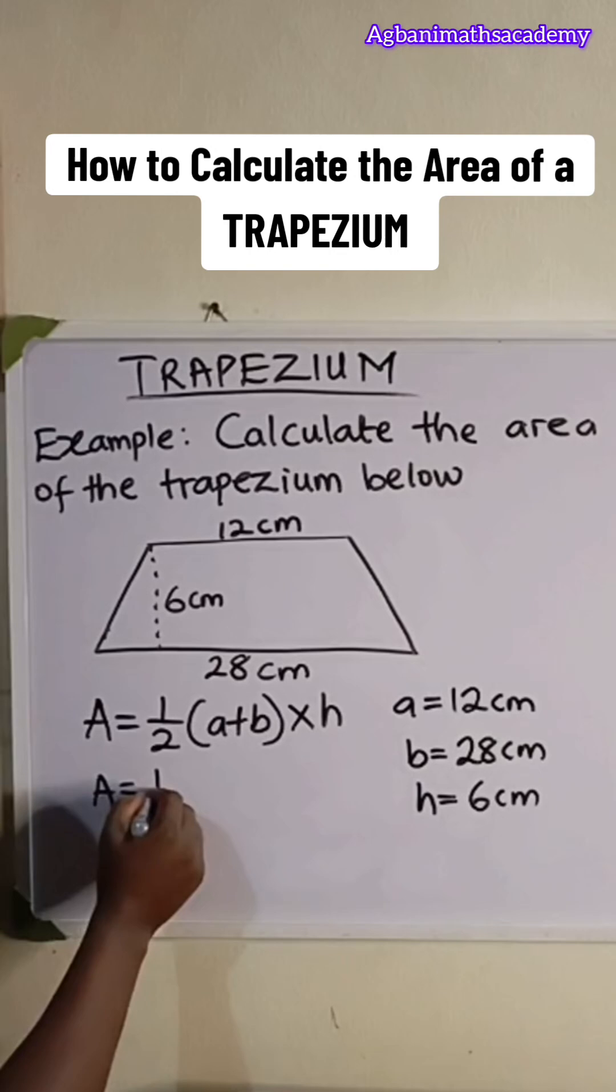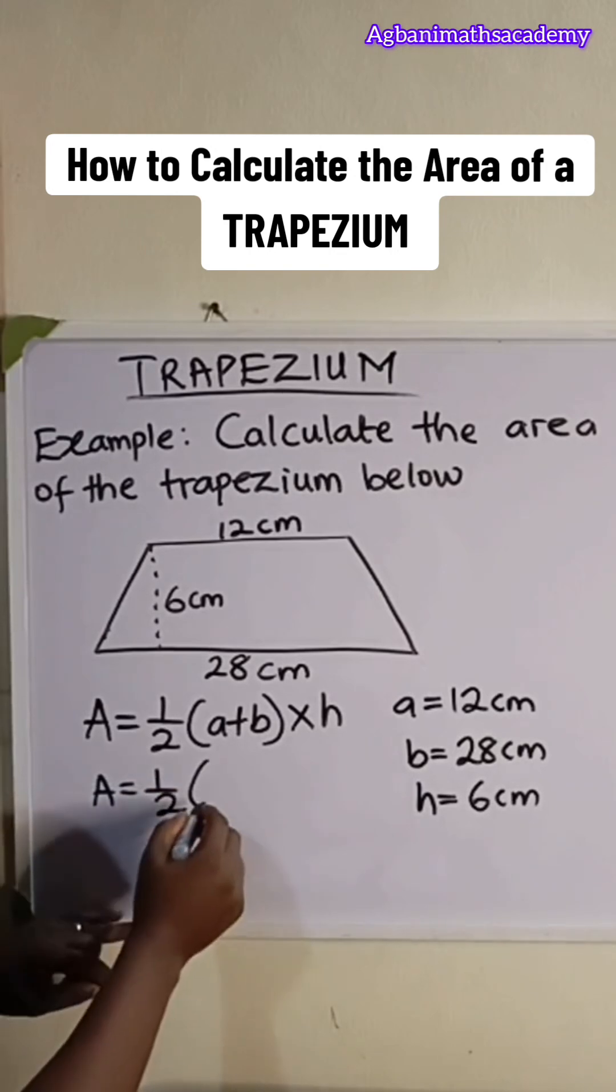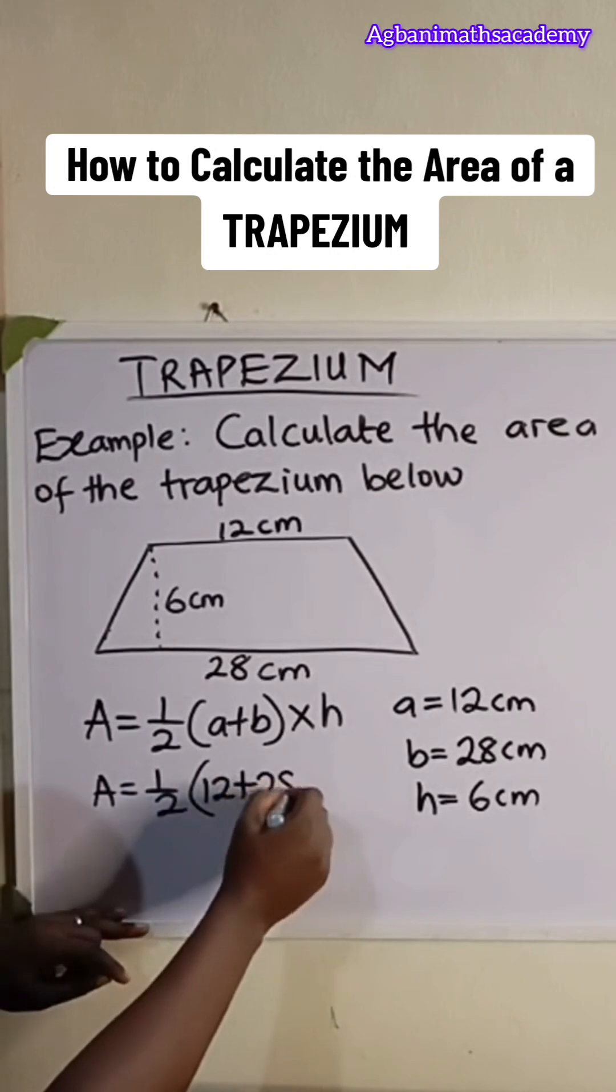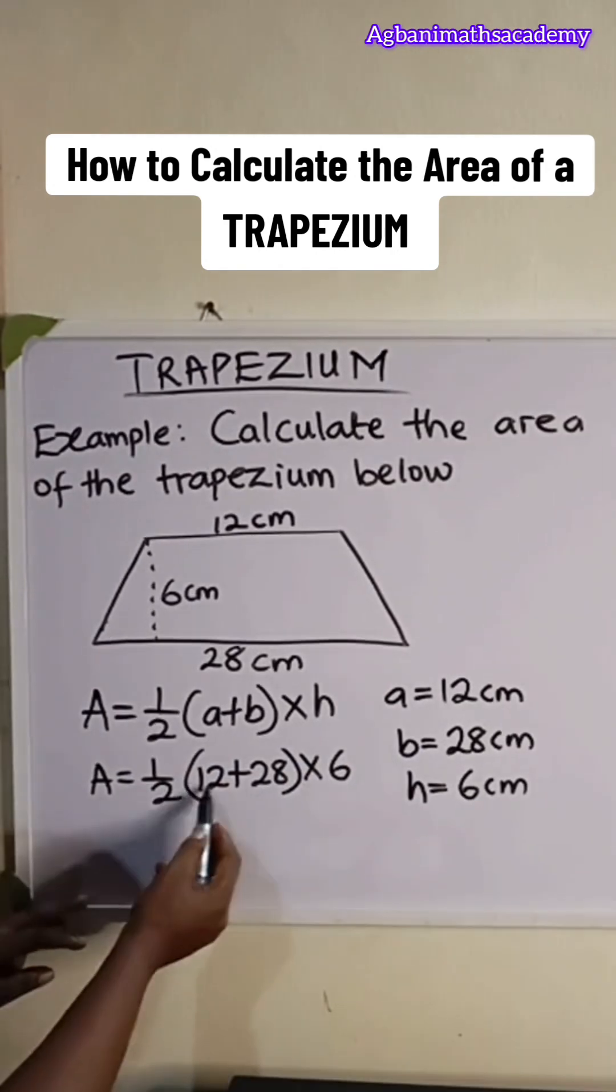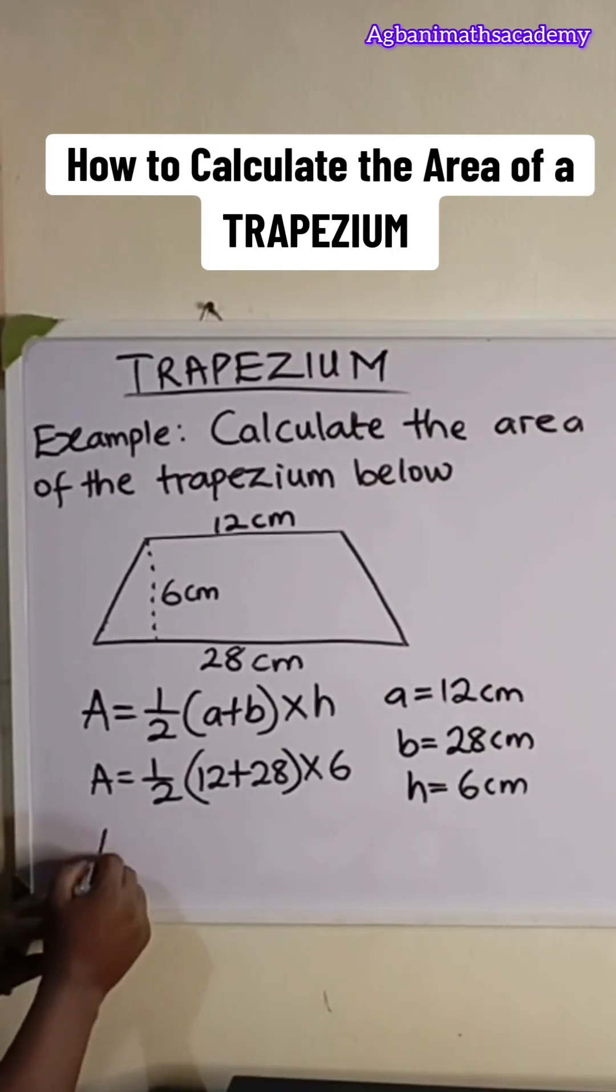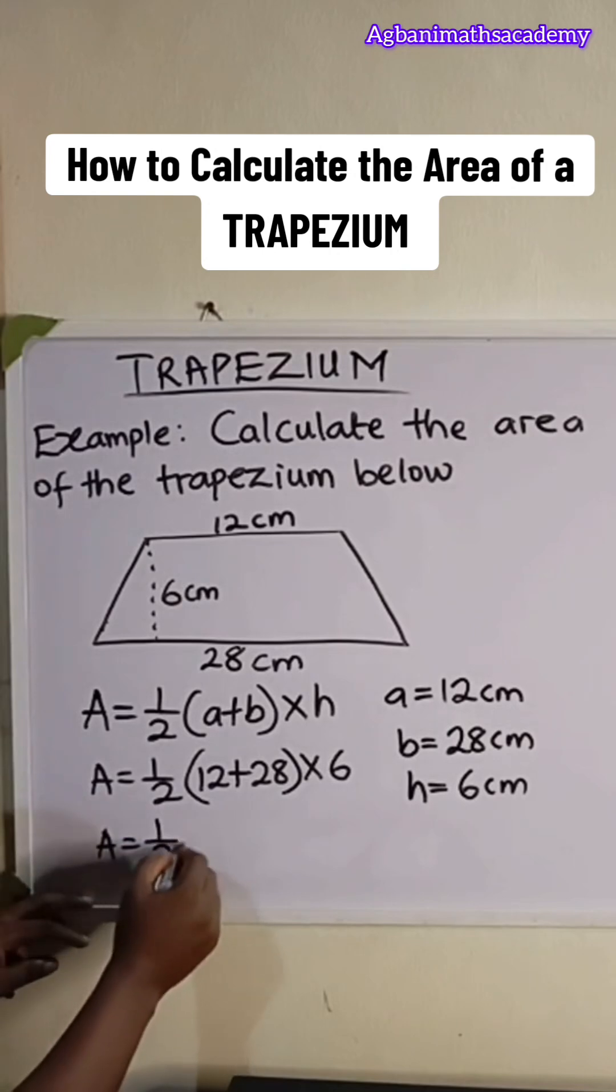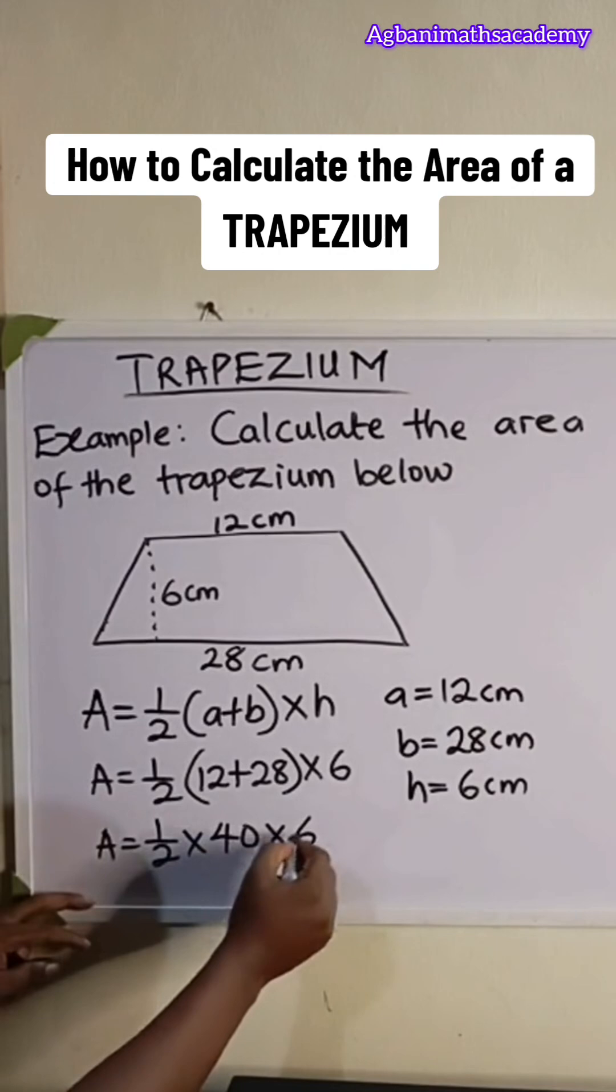So a is equal to half, 12 plus 28 times 6. So 12 plus 28 is going to give us 40. So a is equal to half times 40 times 6.